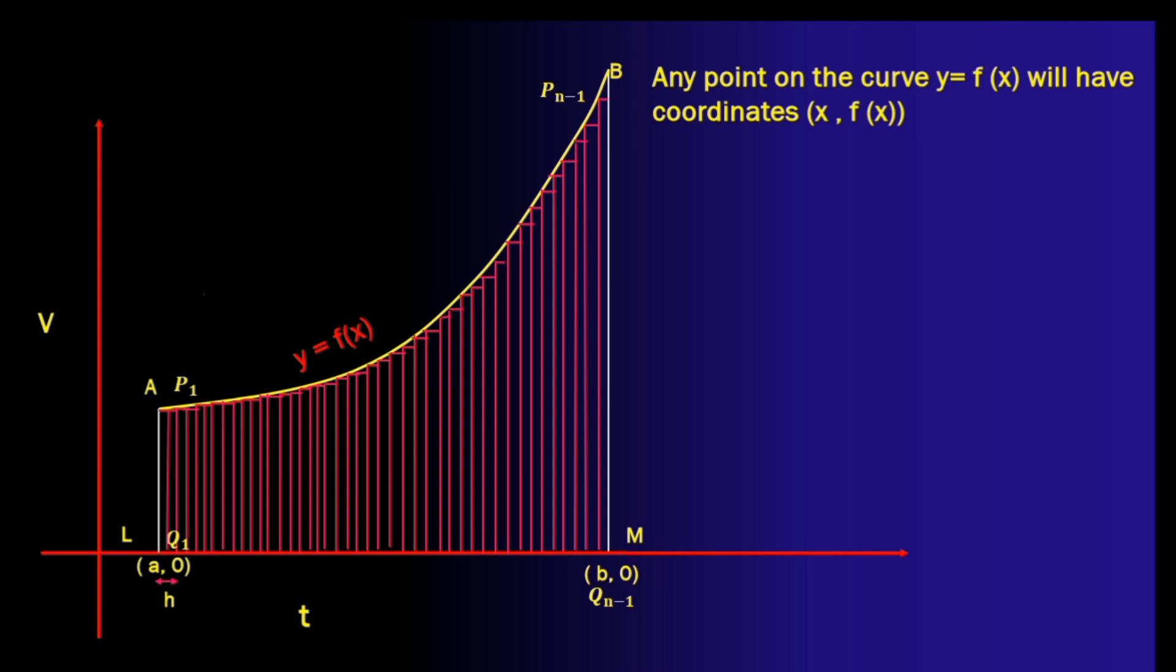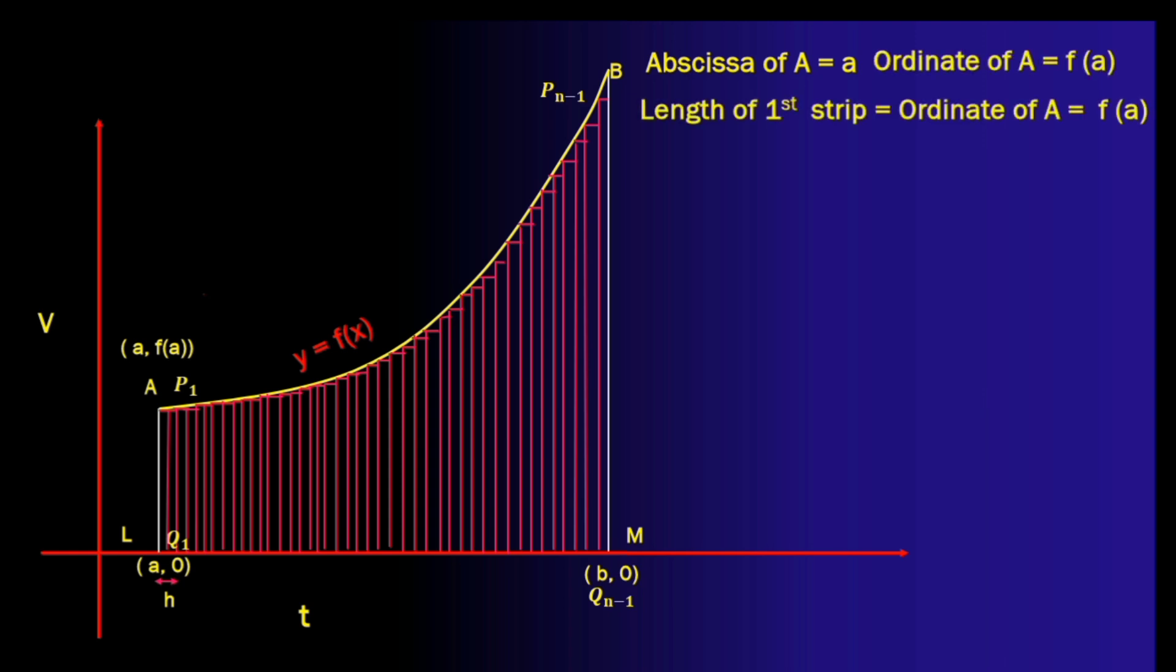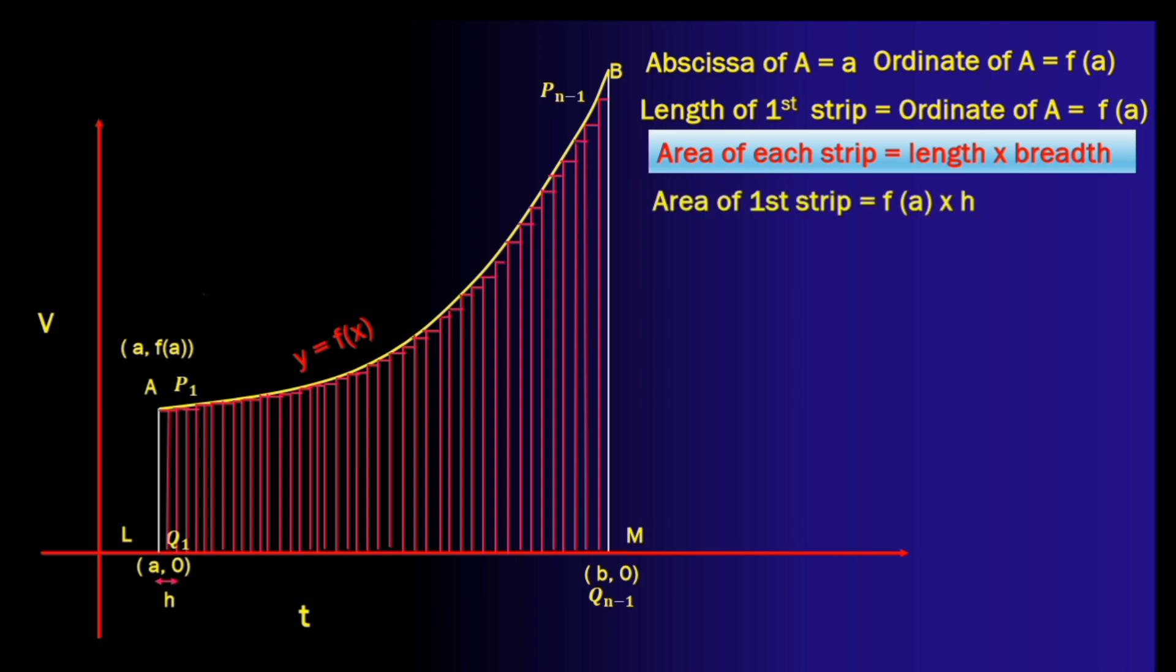Let us also decide what will be the coordinates of any point on this curve. Yes they will be x comma f of x where the x is the x coordinate or the abscissa of that point and the ordinate or the y coordinate will be f of x. Now with this knowledge we can easily say that the coordinates of point a will be a comma f of a where the abscissa is a and the ordinate is going to be f of a. So the length of the first strip will be the ordinate of a which is f of a. Now remember that as n is tending to infinity each strip is now going to be treated like a rectangle. So the area of the rectangle is length into breadth. So what will be the area of the first strip? Yes it will be f of a times h.